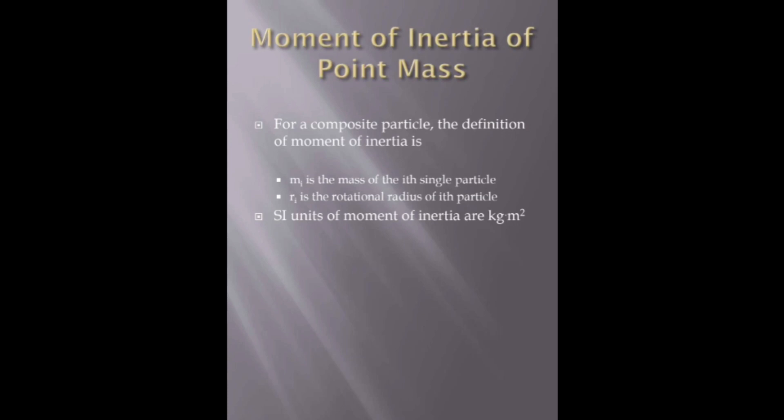Moment of inertia of point mass. For composite particle, the definition of moment of inertia is I, where m is the mass of i-th particle and r is rotational radius of i-th particle. SI unit of moment of inertia is kilogram meter square.